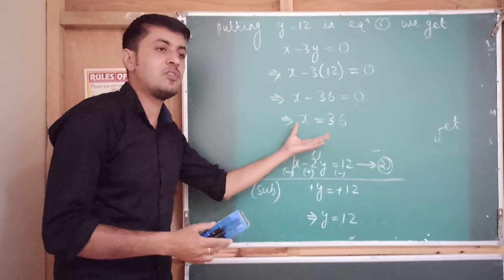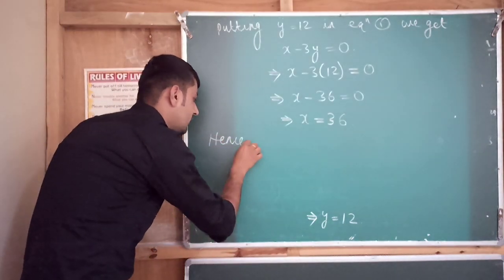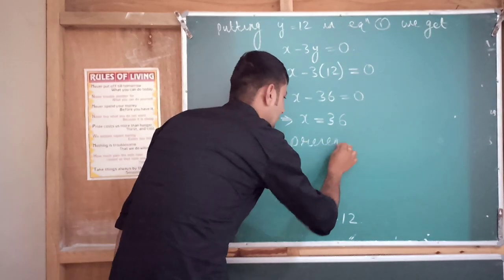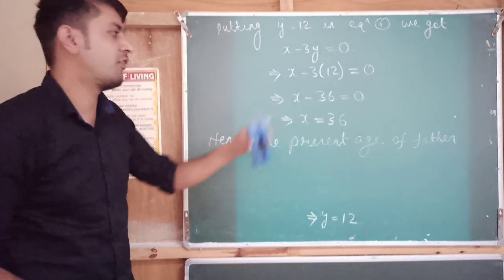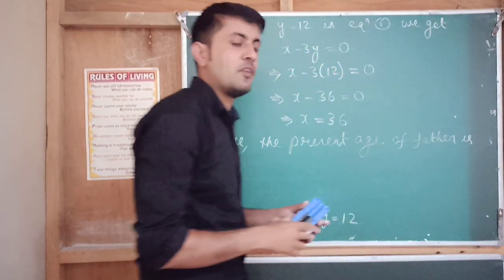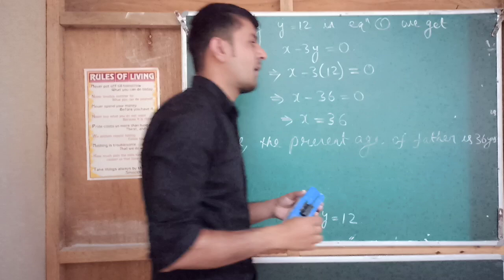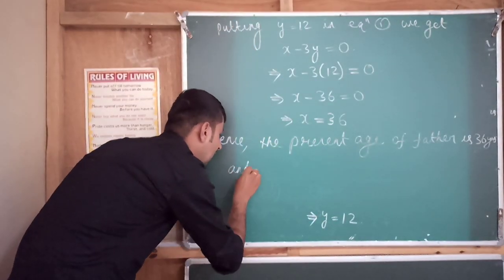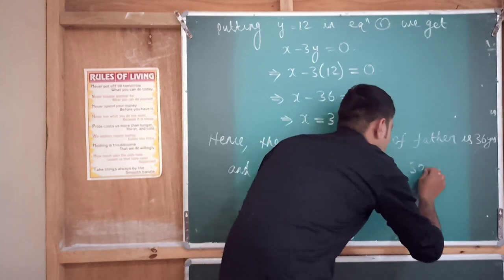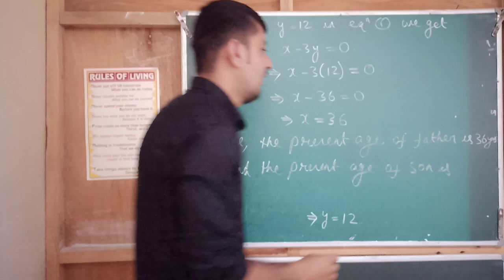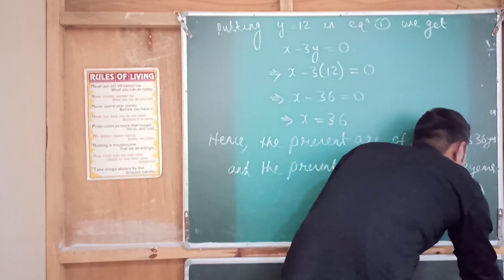So we can write down the conclusion. Hence, the present age of the father is x, which is 36 years. And the present age of the son is y, which is 12 years. This is the required answer. Thank you.